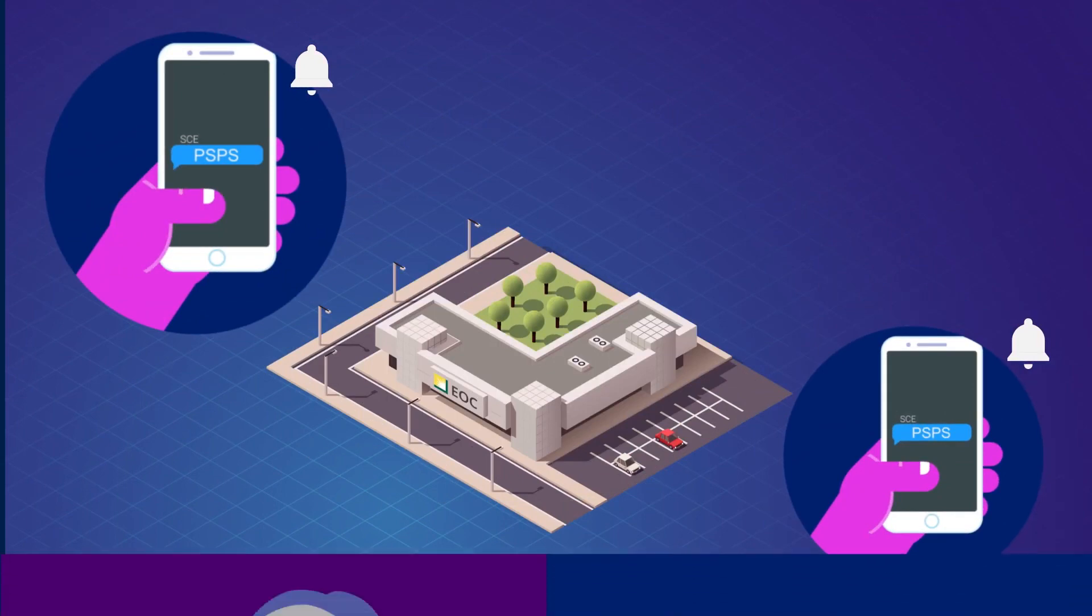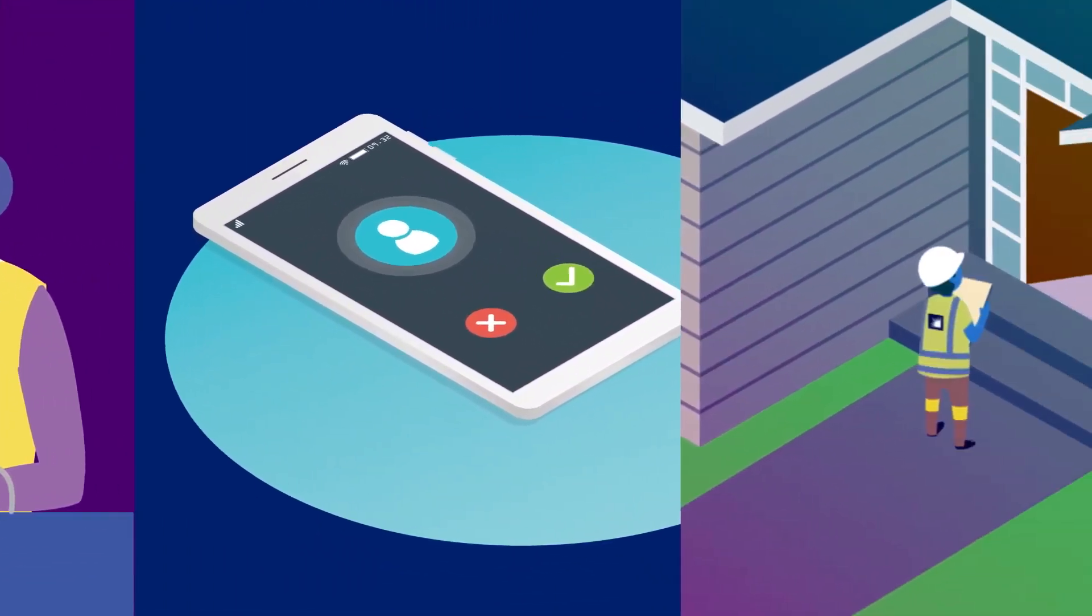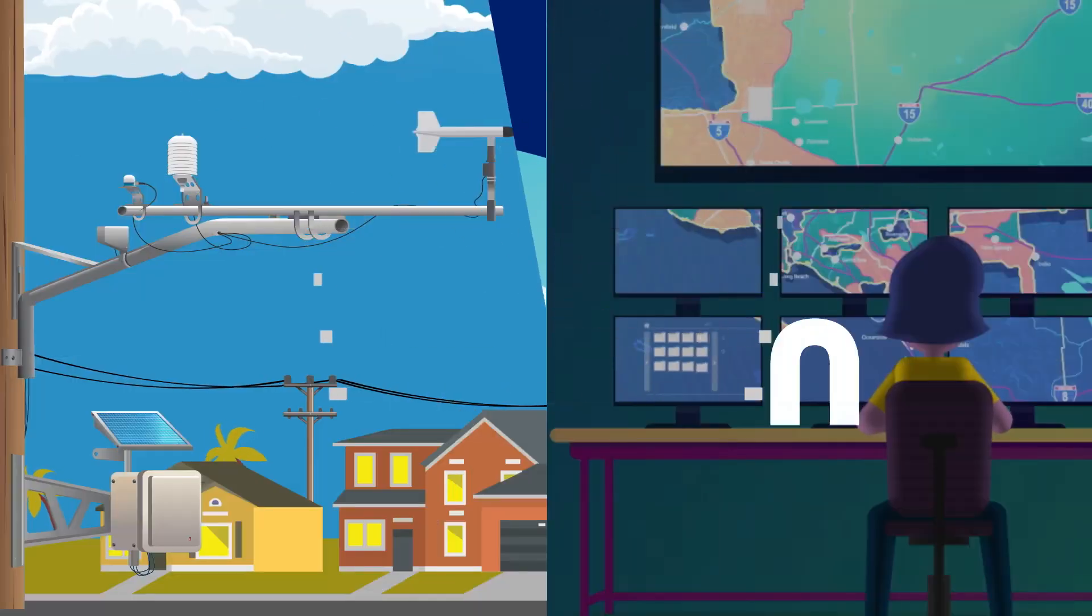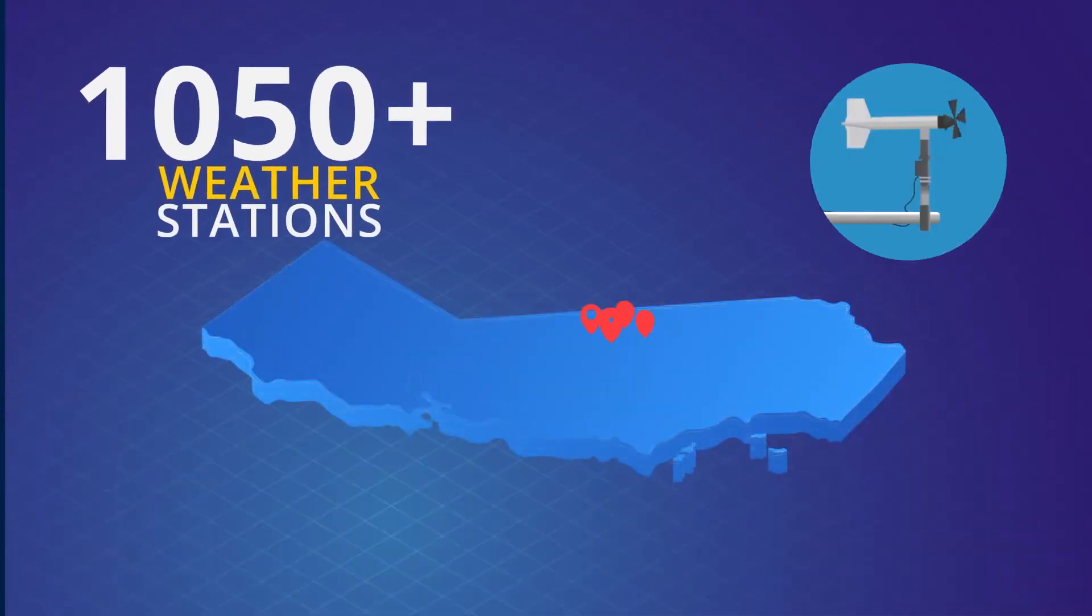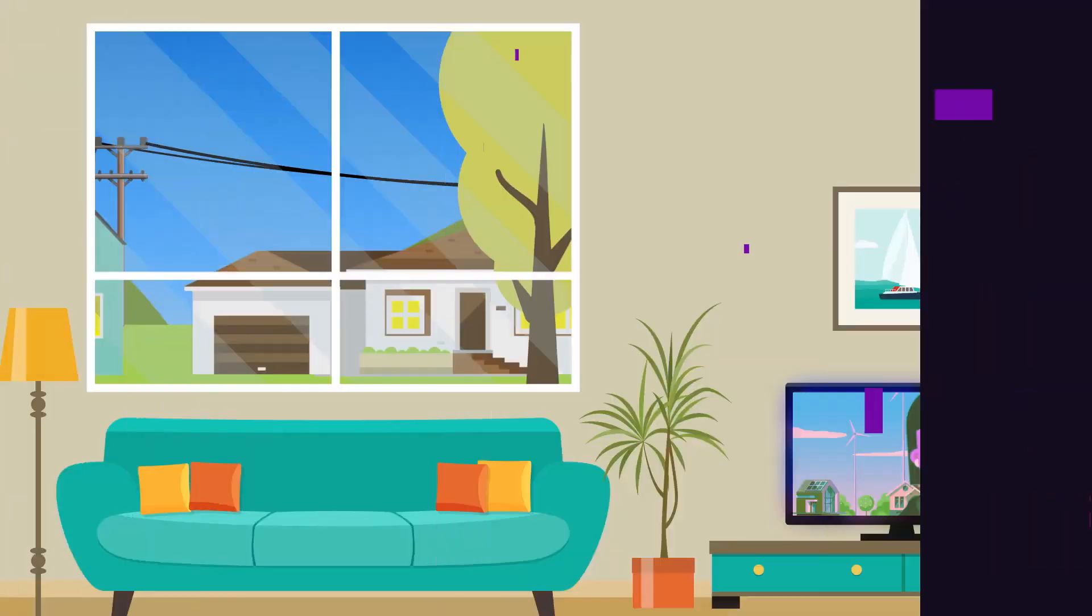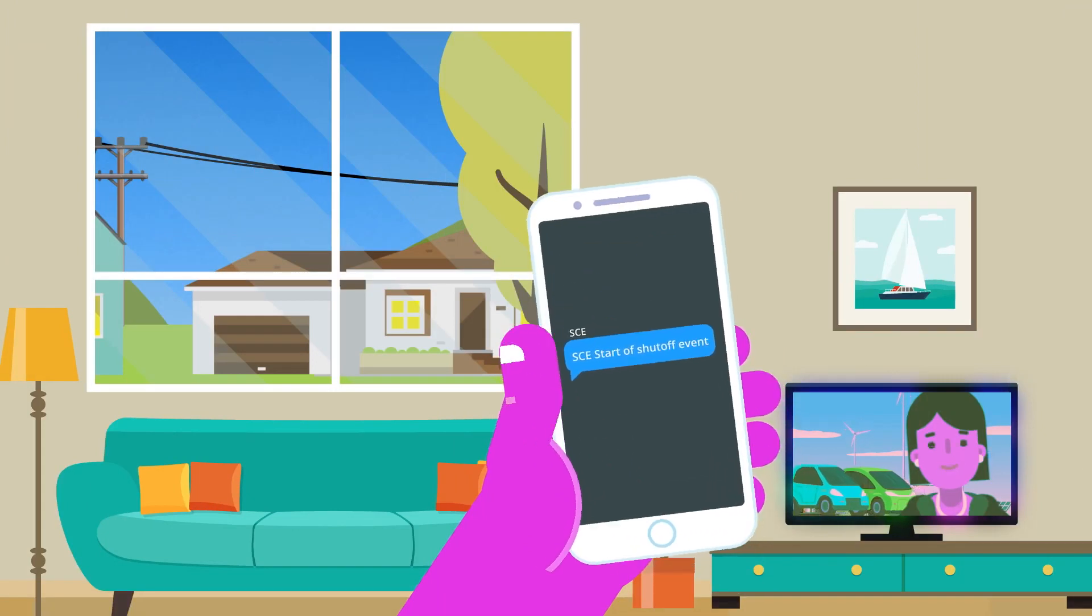If we can't reach our critical care and medical baseline customers who rely on life-saving medical equipment, we try to visit them. On the day of the event, we get readings every 10 minutes from more than 1,050 weather stations. We also gather data from our crews equipped with mobile weather units.